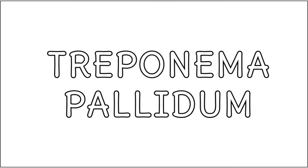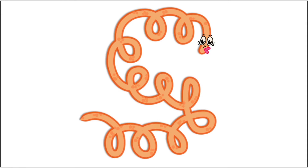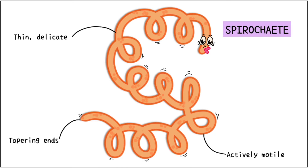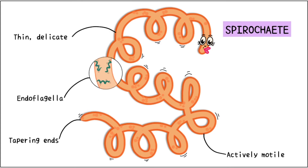Syphilis is caused by an organism called Treponema pallidum. It belongs to the spirochete family. It is a thin, delicate organism with tapering ends. It has about 10 spirals that make up its body. It is actively motile due to the presence of endoflagella. It is important to remember that Treponema does not take on ordinary stains.